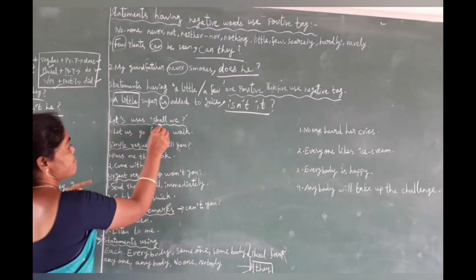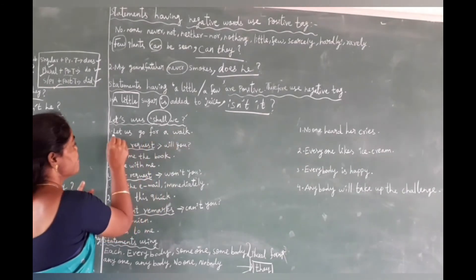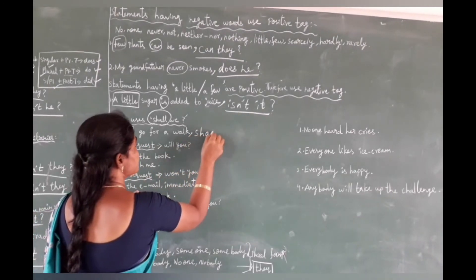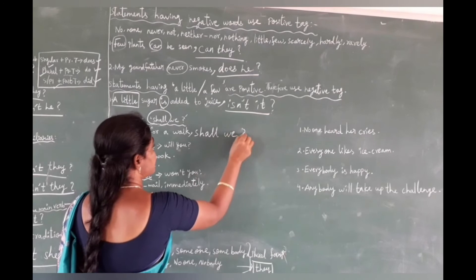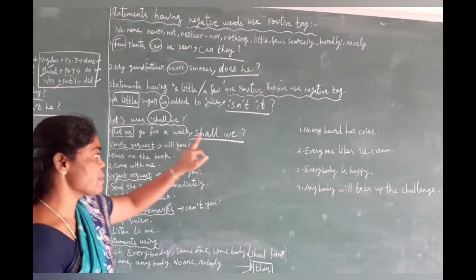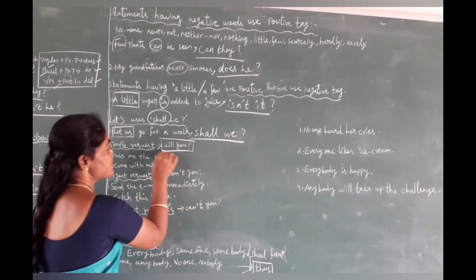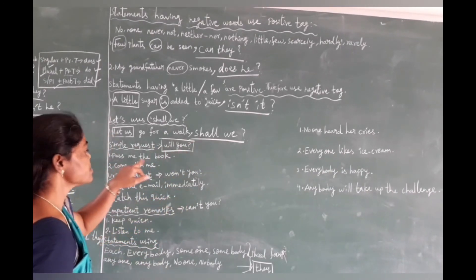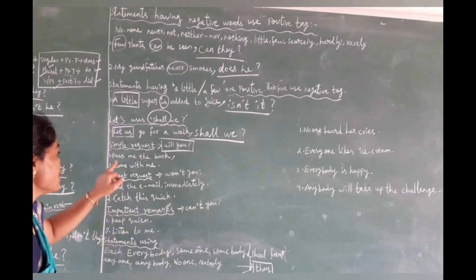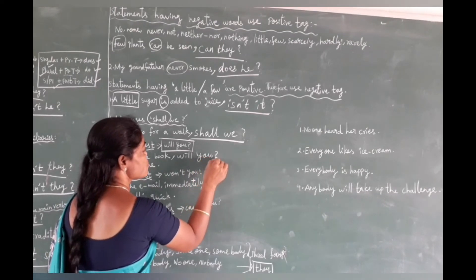Now, where do we use 'shall we'? We use 'shall we' for suggestions — for example, 'Let's go for a walk, shall we?' For simple requests — for example, 'Pass me the book' or 'Come with me' — we use the tag 'will you?' So: 'Pass me the book, will you?' and 'Come with me, will you?'